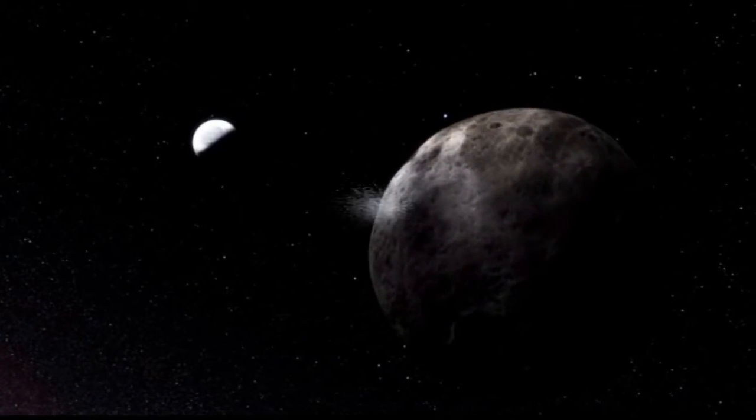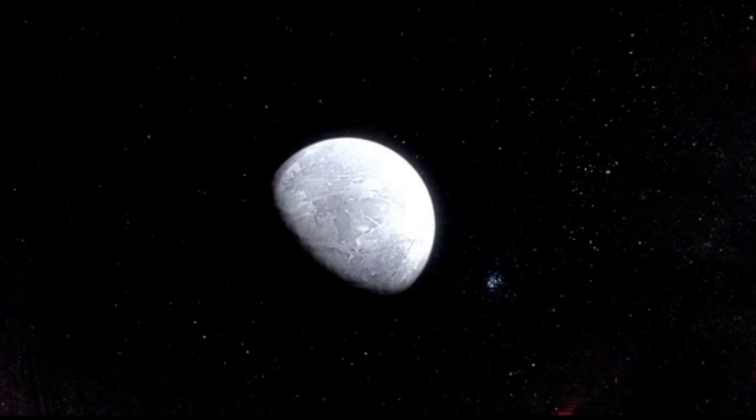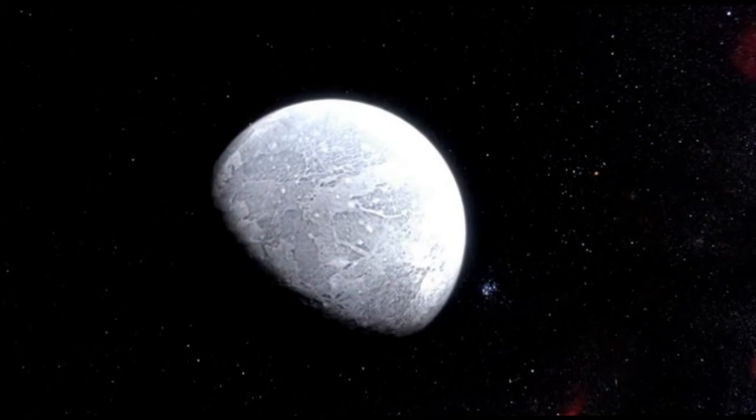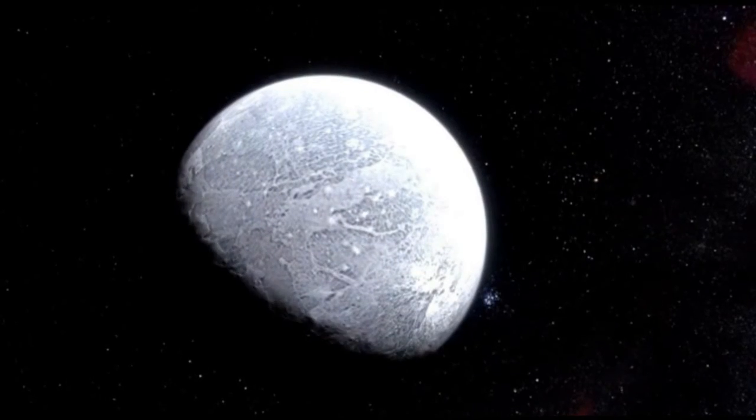Eris seems to be a rocky body surrounded by a thick mantle of ice. Eris turns out to reflect almost all of the light that falls on it. Its surface is even brighter than fresh snow on Earth.